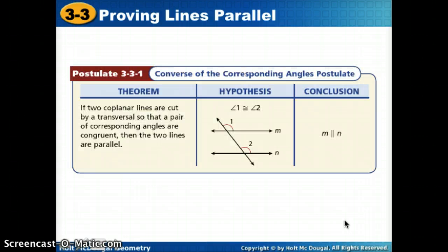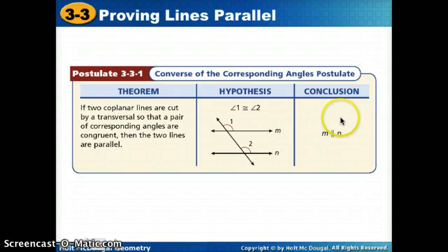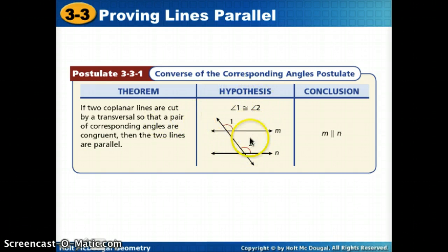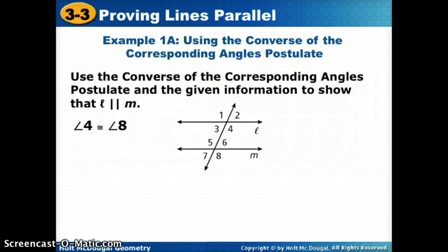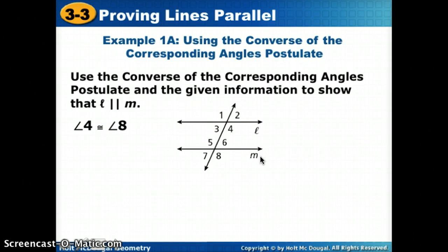Our first one — we're going to start with the converse of the corresponding angles postulate. So instead of saying if we have parallel lines cut by a transversal then these angles are congruent, we're going to go backwards. We're going to say if we know that corresponding angles are congruent, then we can say that the lines are parallel. So let's look at a really easy example.